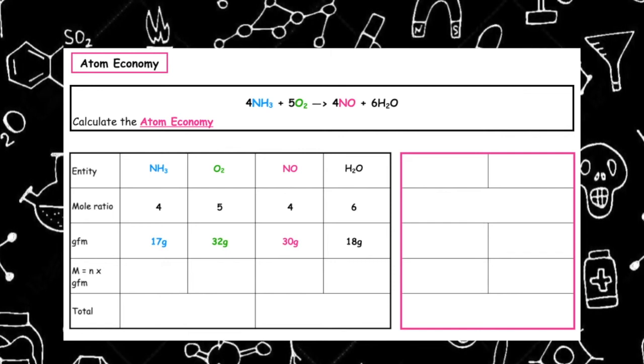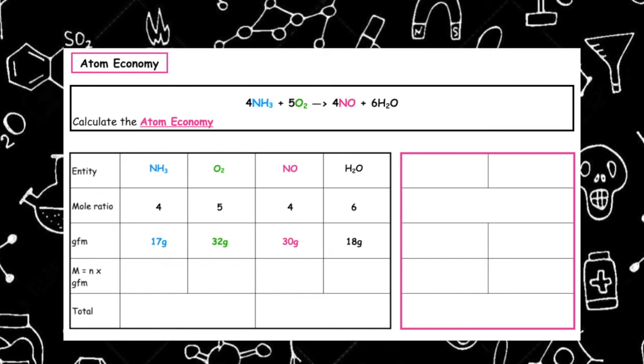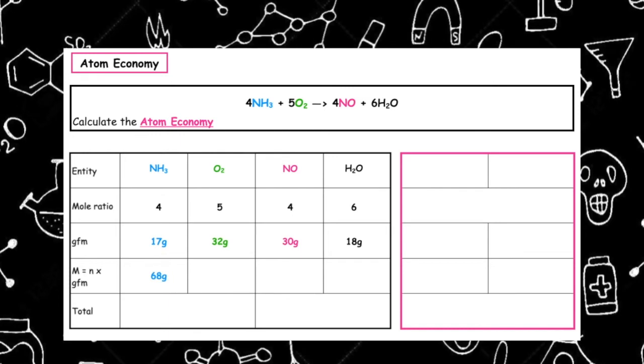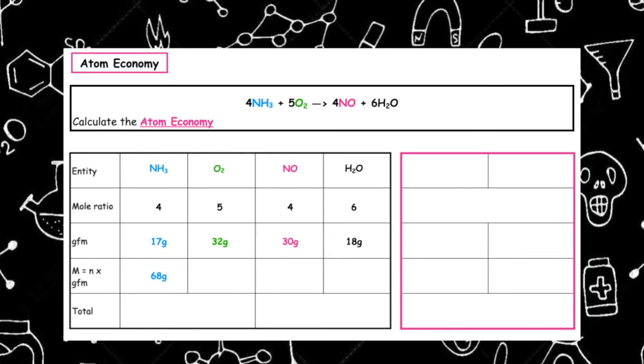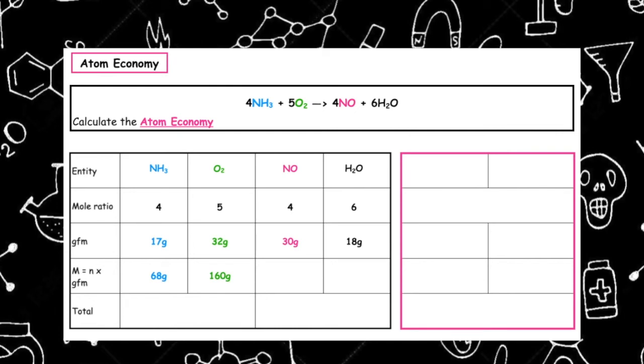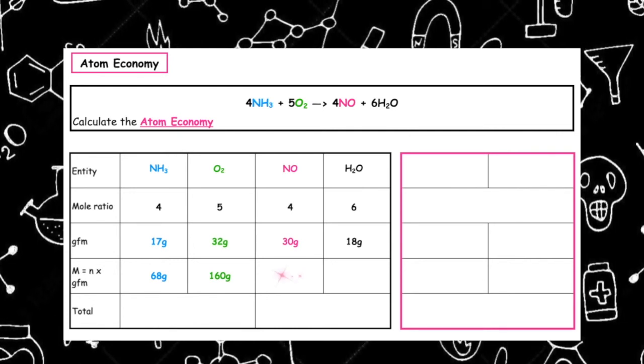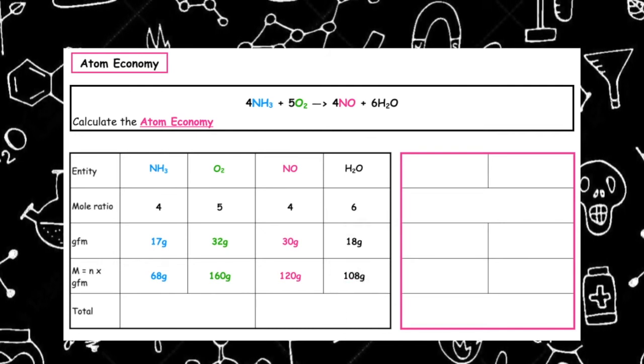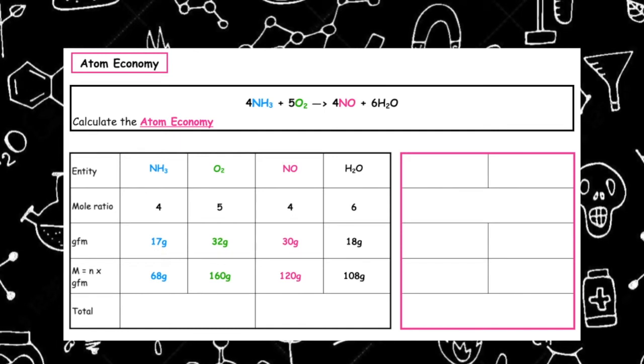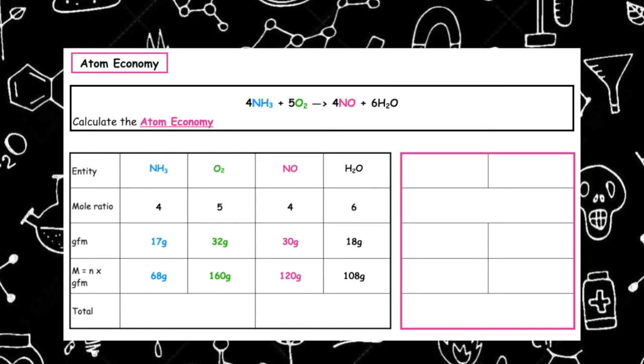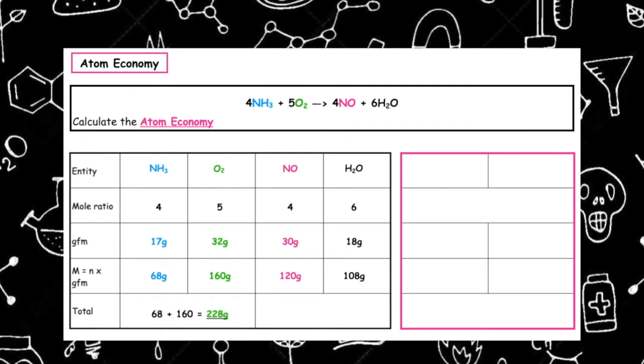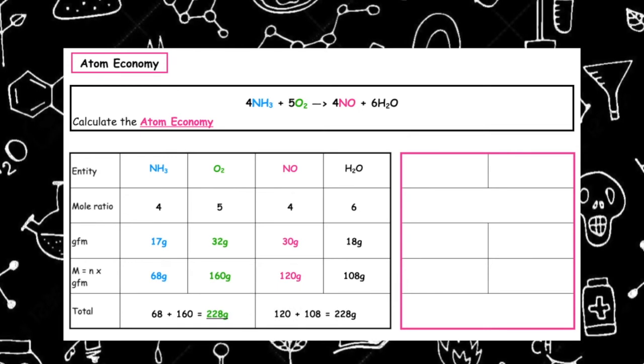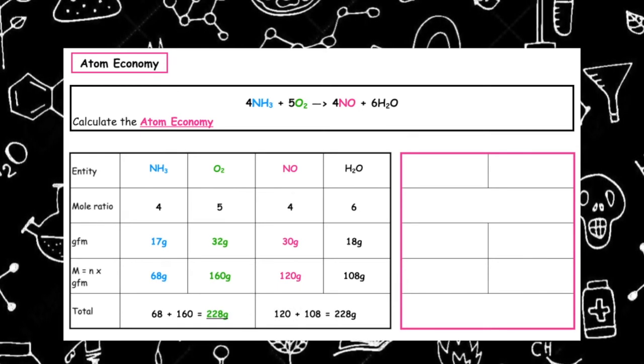Now because we've got a gfm and our number of moles, we can calculate the mass because mass is equal to n times gfm. 4 times 17 comes out at 68, 5 times 32 is 160, 4 times 30 is 120, and 6 times 18 comes out at 108. Remember what goes in must come out, so we add up our total mass of our reactants. 68 plus 160 comes in at 228, and the total mass of our products we would have 120 plus 108 which comes out at 228.